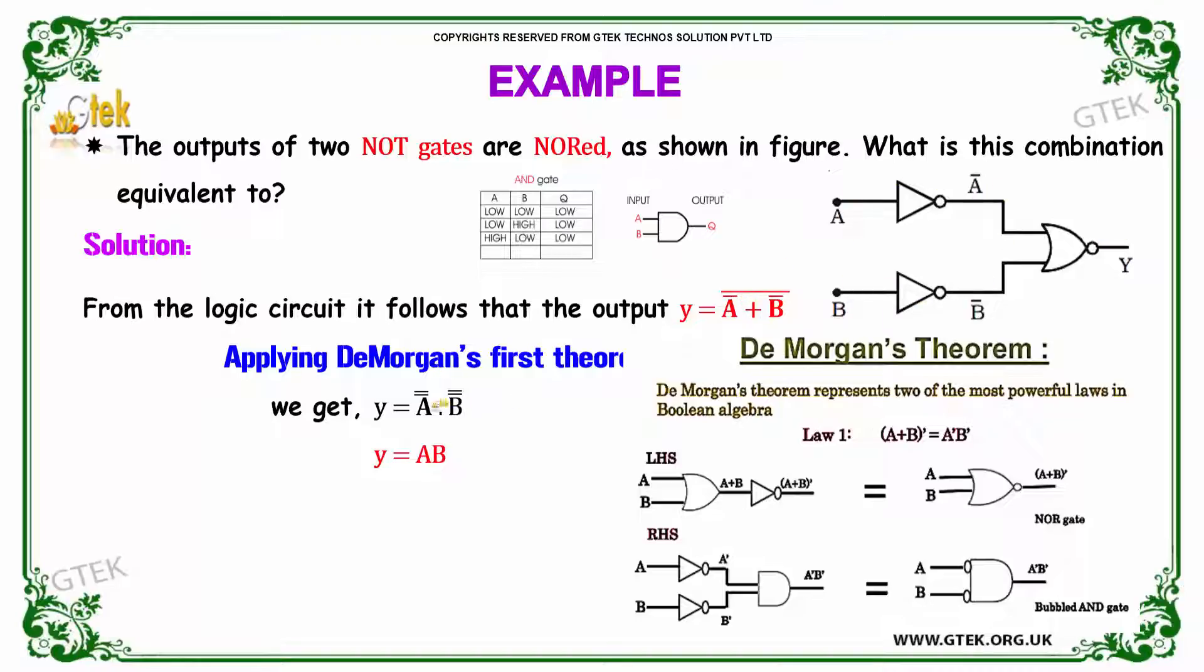Obviously, A complement of complement is A and B complement of complement is B. So the value is Y is equal to A into B. Hence, the given logic gate is AND operation.